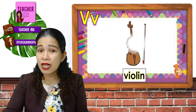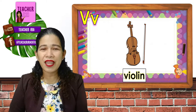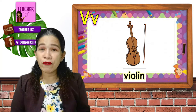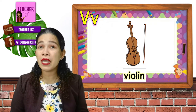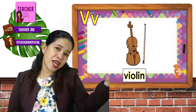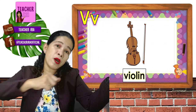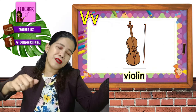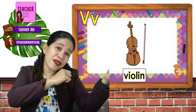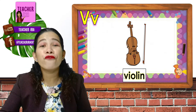Next, let us have a musical instrument that is called violin. Everybody say V, violin. Great! A violin is being played like this — you put it under your chin, hold it firmly, and with the help of the bow, you are going to play it. That's a violin.